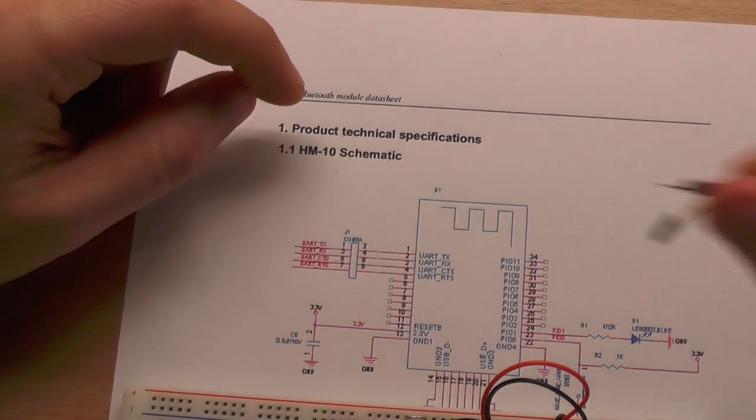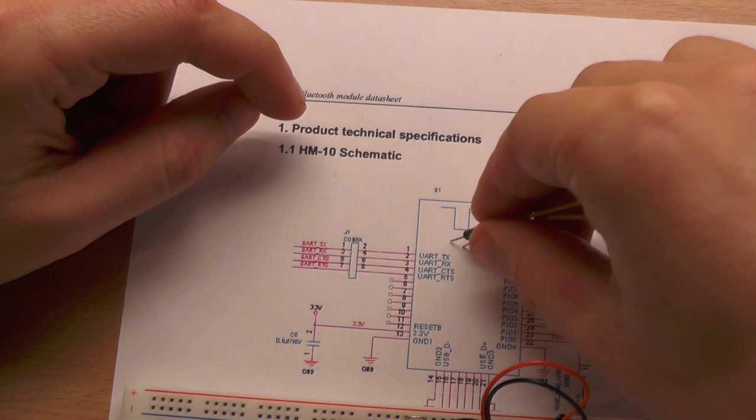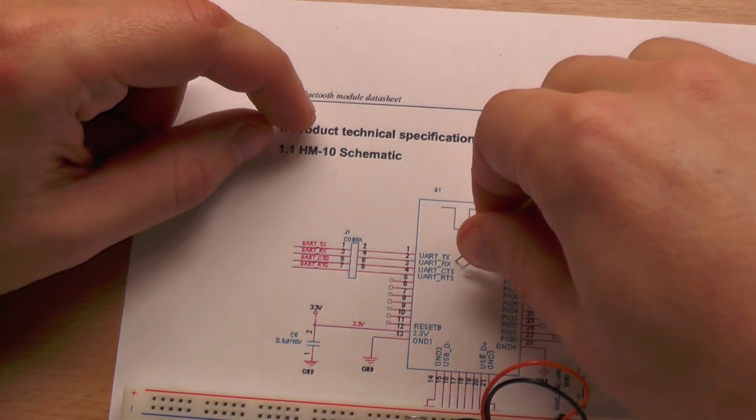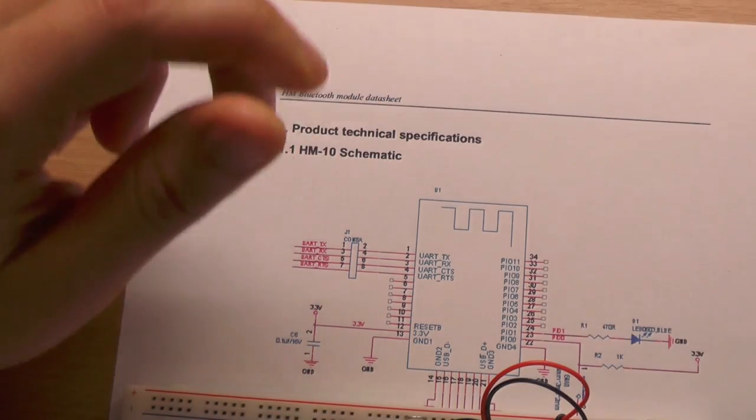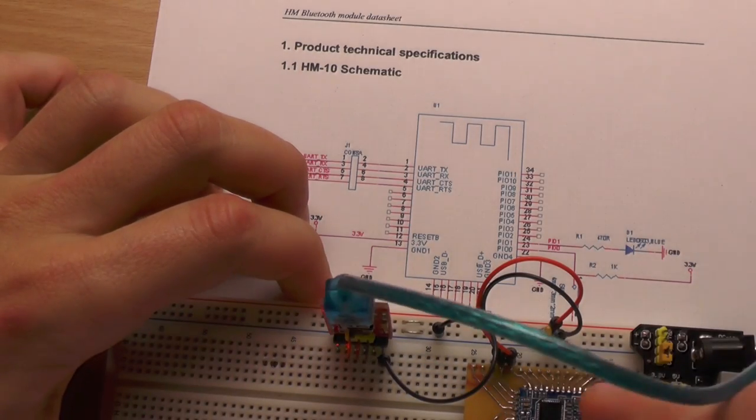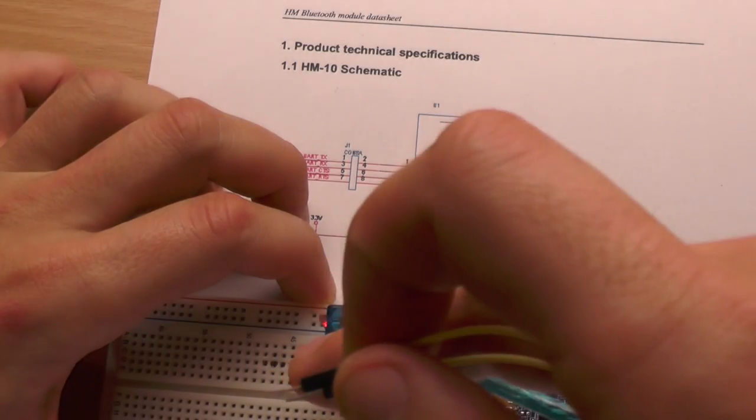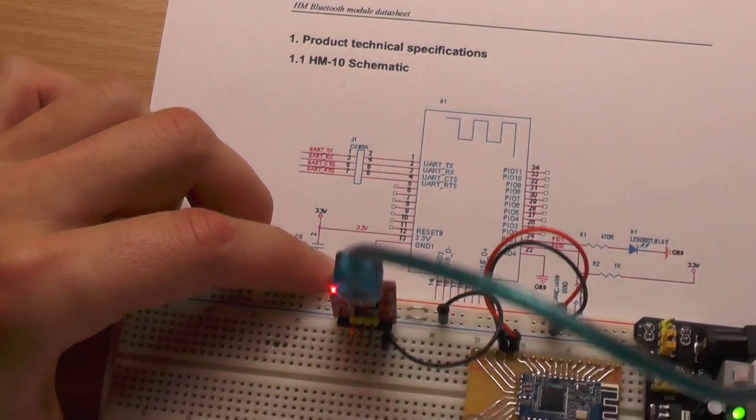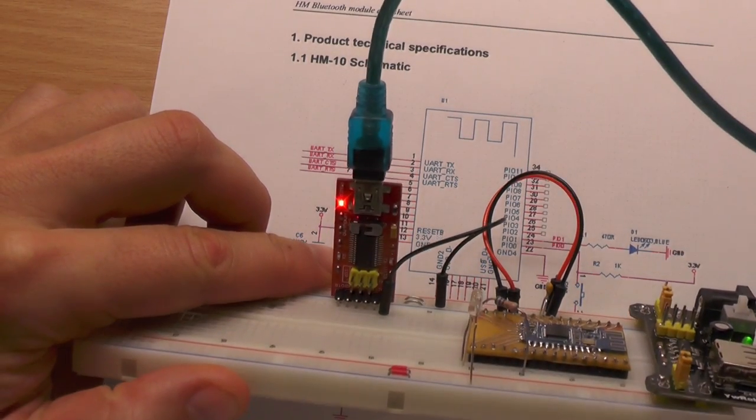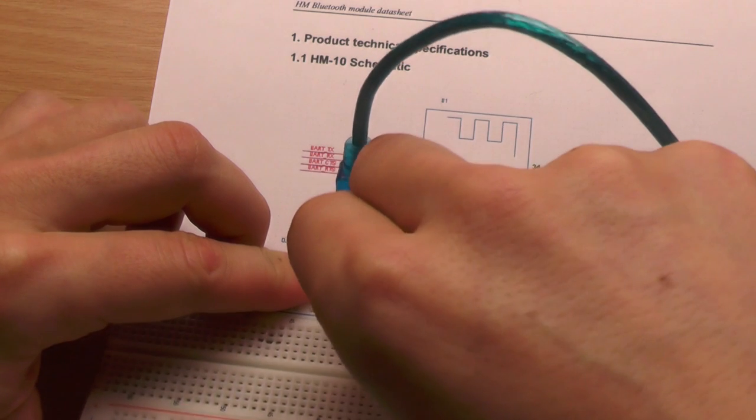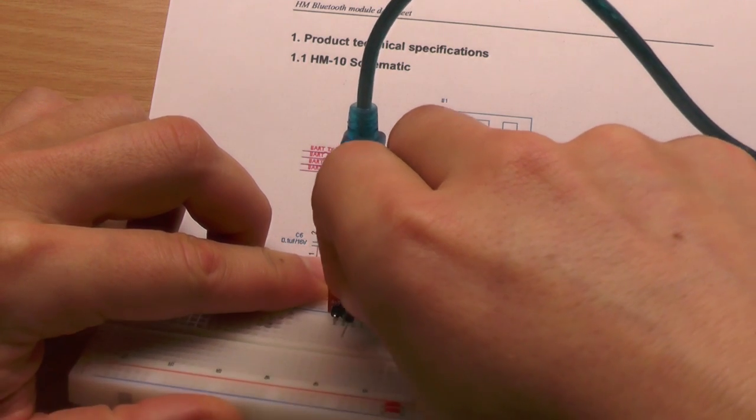TX means transmit I think and RX receive. So since this is transmitting, this is receiving and the other way around, we have to connect TX to RX and RX to TX.